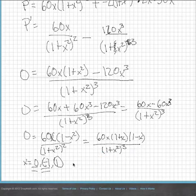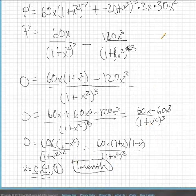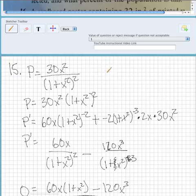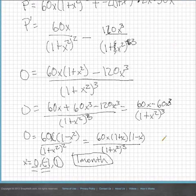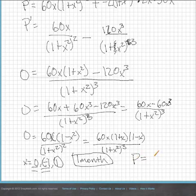So we're actually going to plug that back. So it'll be one month, which is the first part of the question, the first answer. And the percentage is going to be plugging that one month into this. So the percentage equals 30 times one squared over one plus one squared squared. So it's going to be 30 over 4.